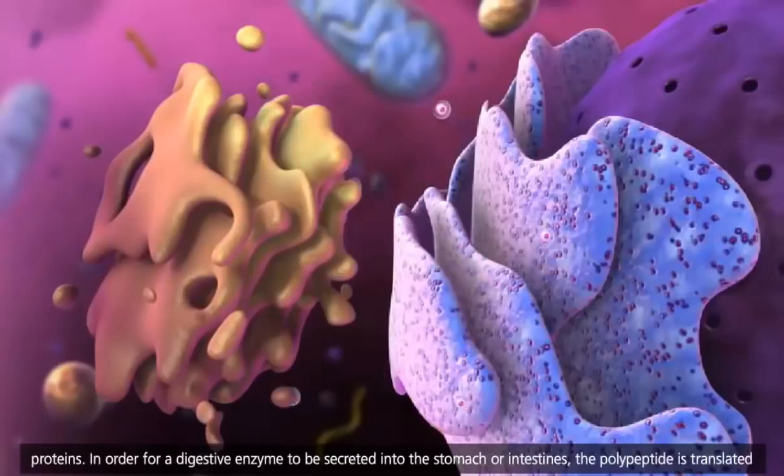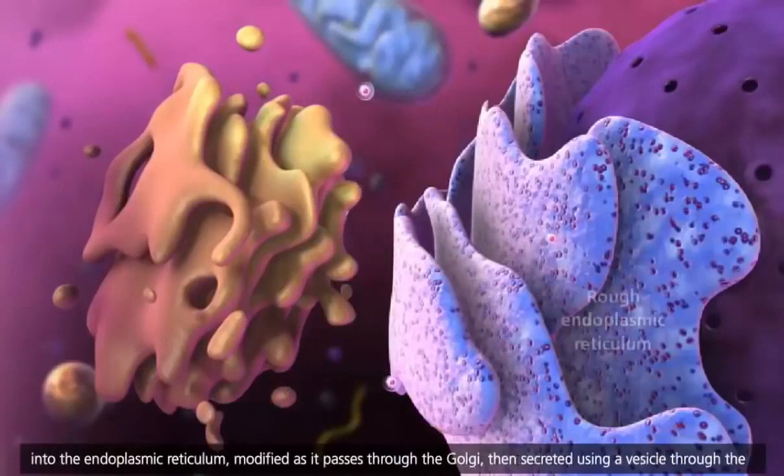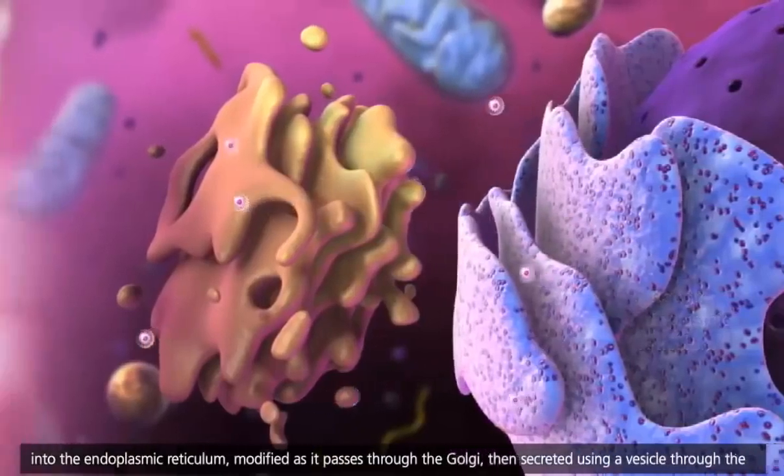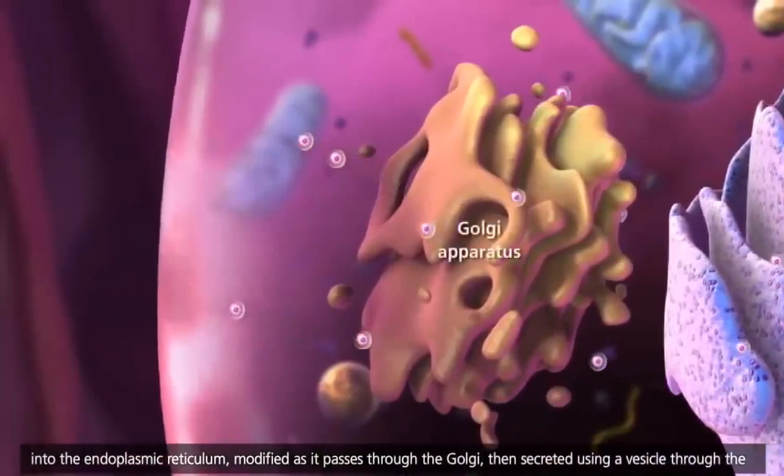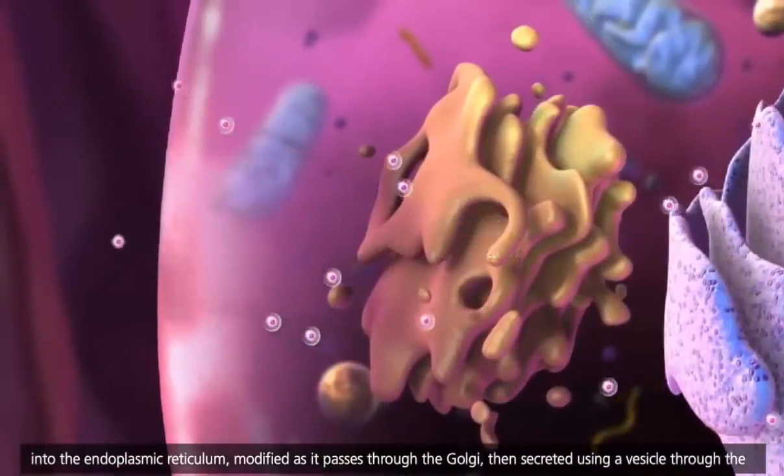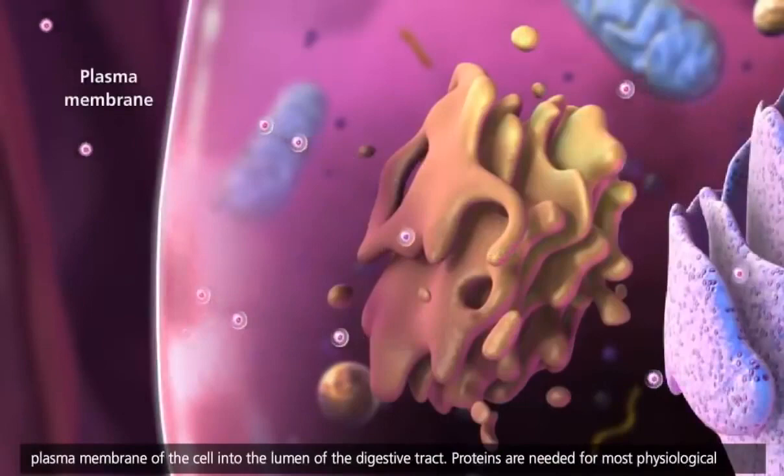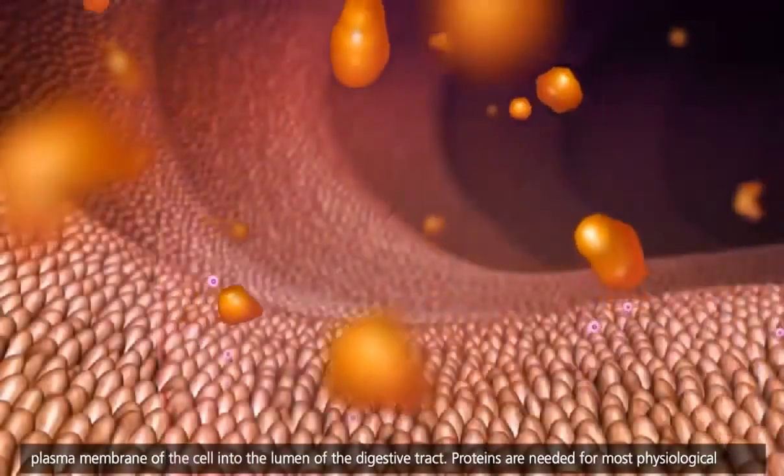In order for a digestive enzyme to be secreted into the stomach or intestines, the polypeptide is translated into the endoplasmic reticulum, modified as it passes through the Golgi, then secreted using a vesicle through the plasma membrane of the cell into the lumen of the digestive tract.